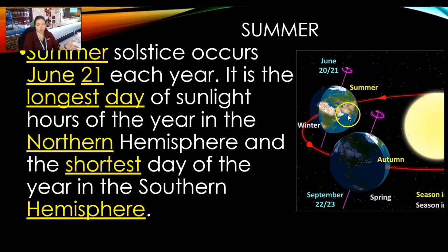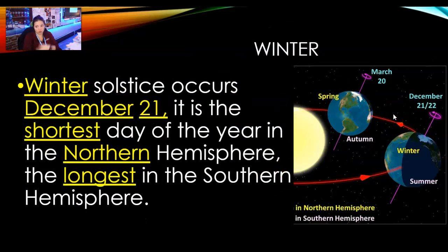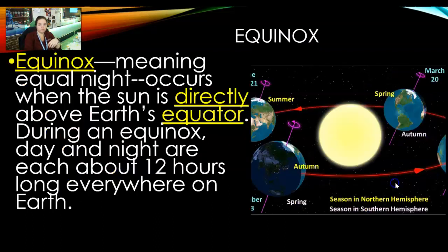The summer solstice is June 21st each year — it's the longest amount of sunlight we have in the northern hemisphere. Because that's their winter, it is the southern hemisphere's shortest day. When we have our winter, which we just had on December 21st, that's our shortest day — roughly about six hours of sunlight. Meanwhile, in the southern hemisphere they have the longest day of the year, roughly about 14 or more hours.